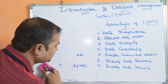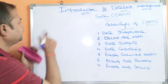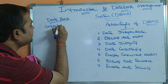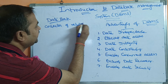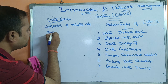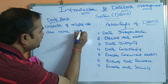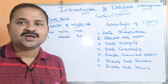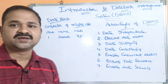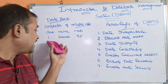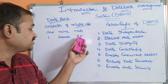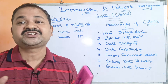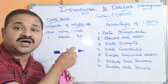Now let us see what is a database. A database is a collection of related data. In a student database, it contains roll number, name, and marks — for example, roll number 1, name Ramesh, marks 95. It is called related data because there is a relation between roll number, name, and marks — all fields are interrelated.